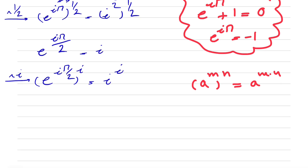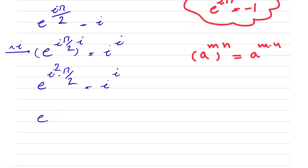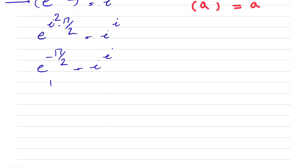We apply the same rule on the left side: e to the power of i squared times pi over 2. And on the right side we have i to the i. Since i squared is minus 1, we get e to the power of minus pi over 2 is equal to i to the power of i.